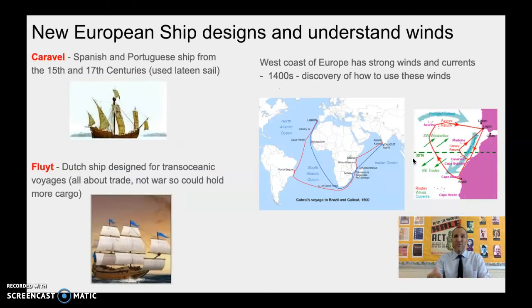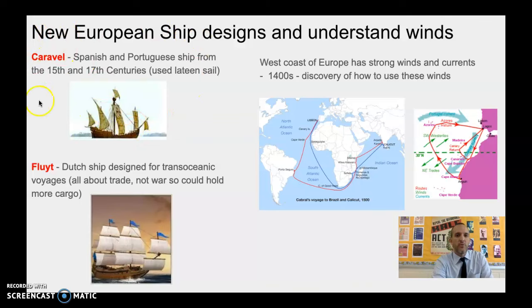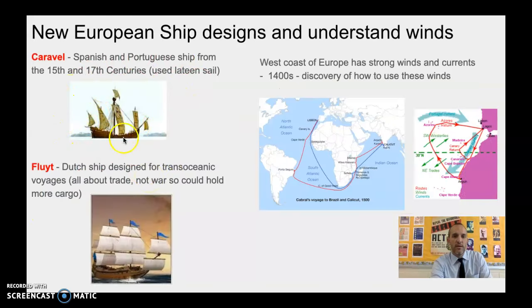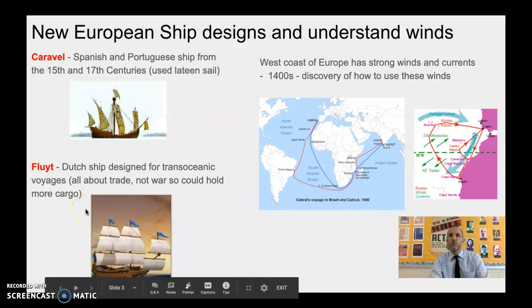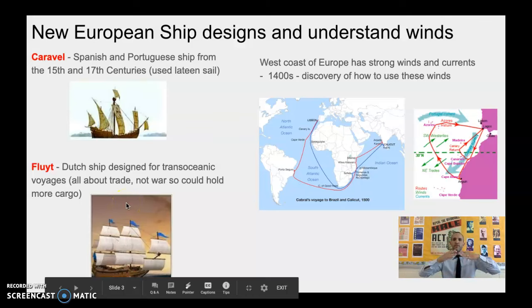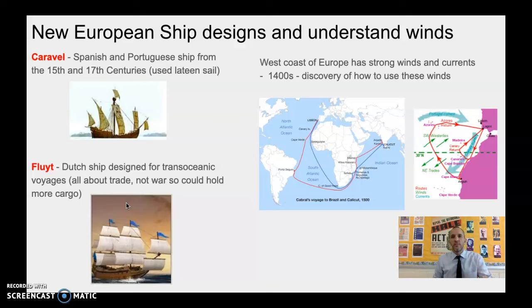The Europeans are going to develop their own innovations too. Two examples of ships: the caravel is the typical Spanish and Portuguese ship from the 15th to 17th century, and they're going to take the Latin sail from the Byzantine and Islamic empires and use it in their shipmaking to explore. Then there's the fluyt — a Dutch ship less used for war. You're not going to see a lot of cannons on it; it's really about trade. The bottom of the boat is designed to maximize cargo and trade as much as possible, transporting goods around the world rather than conquering places.